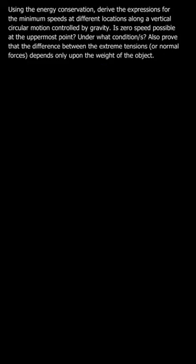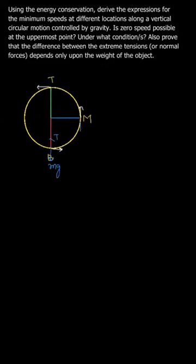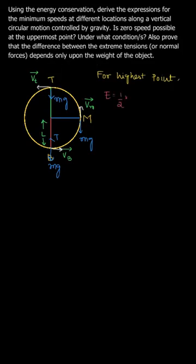Let us look at the diagram. A body is performing vertical circular motion. We are denoting the topmost point as T, the bottom most point as B, and the midpoint as N. The body is performing anti-clockwise circular motion. We have taken velocity at bottom as vb, velocity at midpoint as vm, velocity at the topmost point as vt, and the radius to be l.